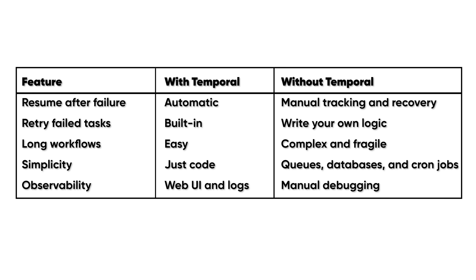In summary: with Temporal, you can resume after failure automatically — without it, you have to manually track and recover workflow steps. With Temporal, retrying failed tasks is built in — without it, you write your own retry logic. With Temporal, long workflows are easy to build — without it, they are complex and fragile. With Temporal, you just write code — without it, you need queues, databases, and cron jobs. With Temporal, you get a web UI and logs for observability — without it, you're stuck with manual debugging.